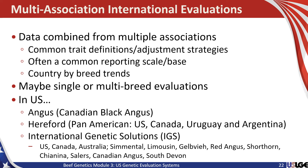There are some other examples in the United States. Angus includes U.S. Black Angus records but also the Canadian Black Angus records from the Canadian Angus Association. Hereford produces a Pan American evaluation that includes U.S., Canadian, Uruguayan, and Argentinian records. And the IGS evaluation includes U.S., Canadian, and Australian records as the primary countries, but also includes breed groups from Simmental, Limousin, Gelbvieh, Red Angus, Shorthorn, Keeniness, Solaire, Canadian Red Angus, and South Devon.